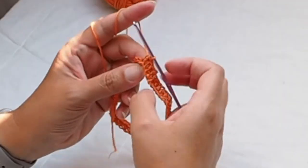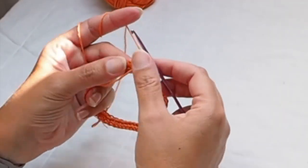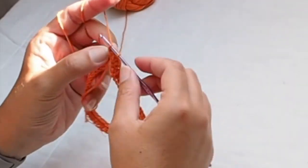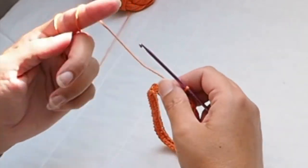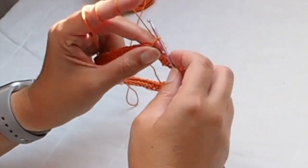First row of half double crochet is ready. I join the round by slip stitch and then I will crochet my pattern.